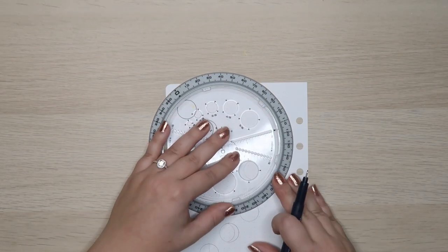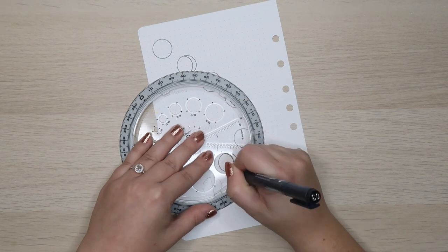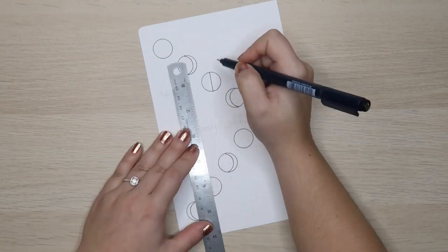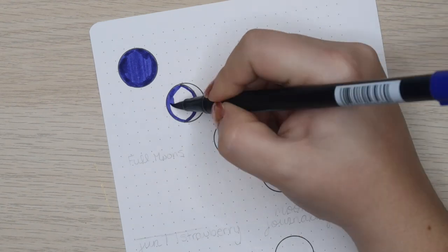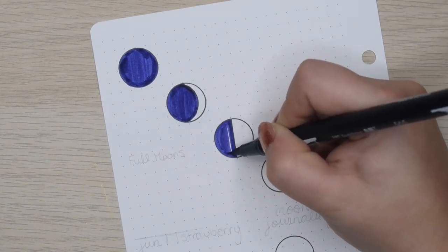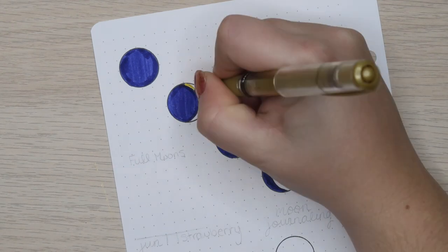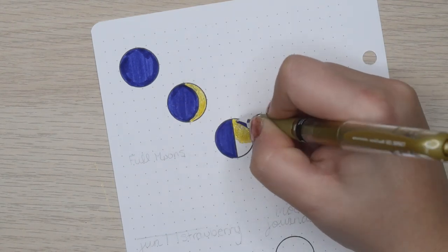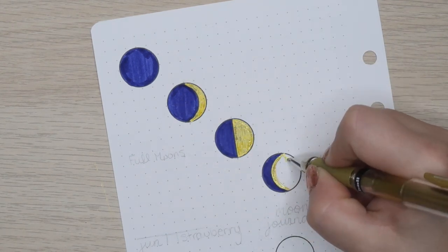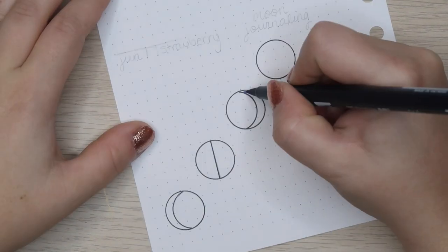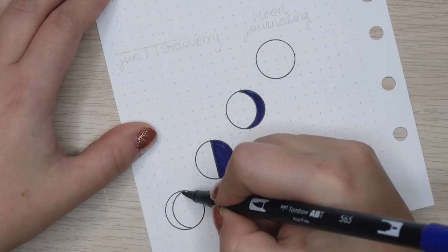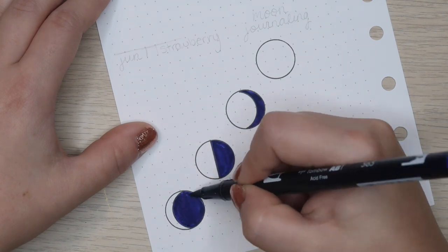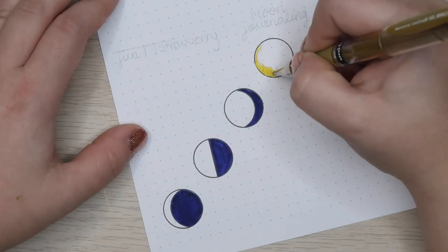Continuing with the astrology theme, the next spread is all about the moon. This year, I made a lot of changes to my journaling routine. I won't get into it because I have an entire video about my journaling routine if you're interested. But one of the things that I incorporated into my journaling routine was moon journaling, specifically for the full moon and the new moon. As of recording this, I've been doing it for about six months and I'm really enjoying it and I know that I'm going to continue into 2021.